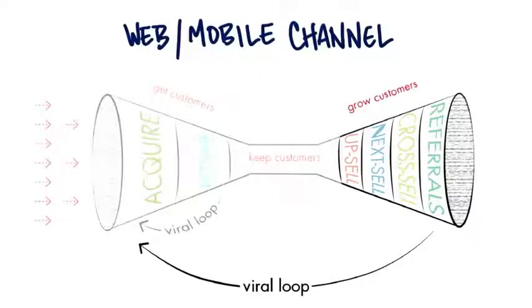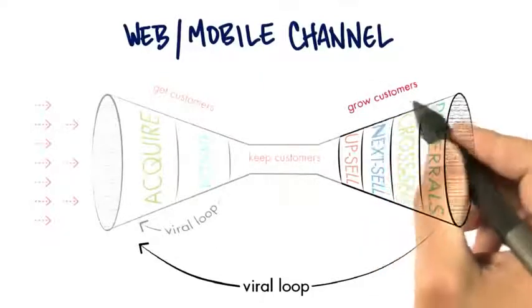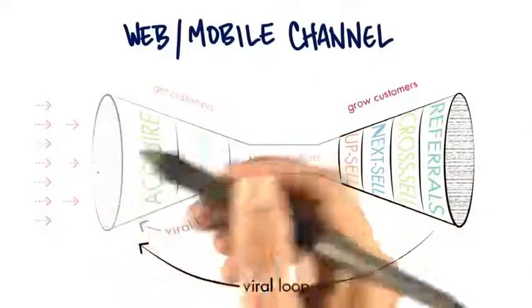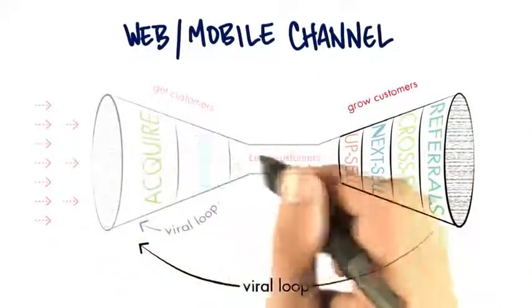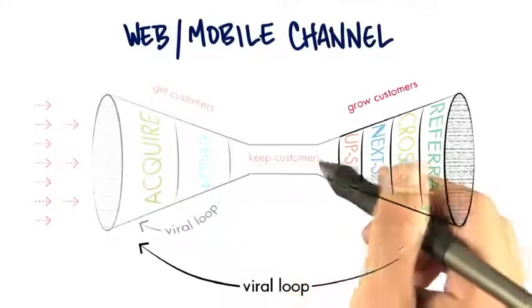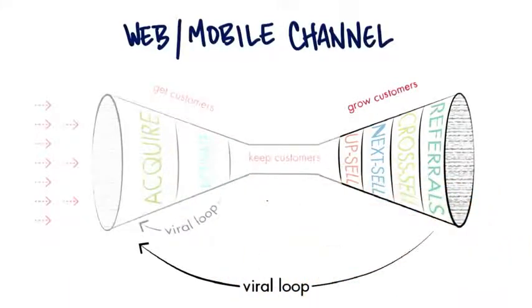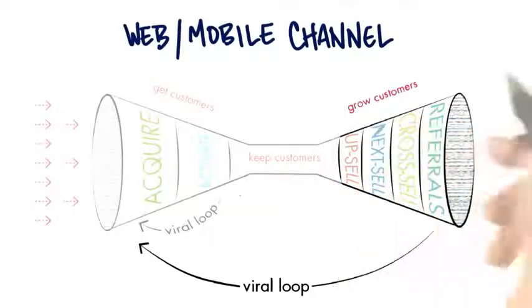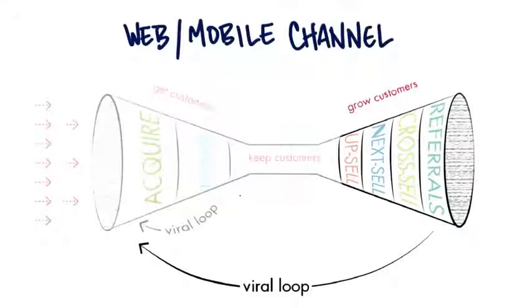This last step is growing customers for the web and mobile channels. If you remember, we started on the left — we did earned and paid media, got customers, acquired and activated them, and we've kept them trying to keep churn to a minimum. Now we're going to grow customers with a series of activities just like in the physical channel: can we upsell, next sell, cross sell, and can we get referrals that will give us a viral loop?